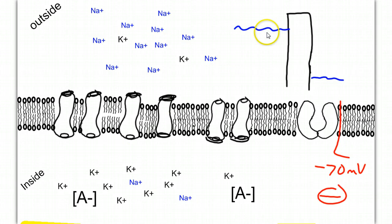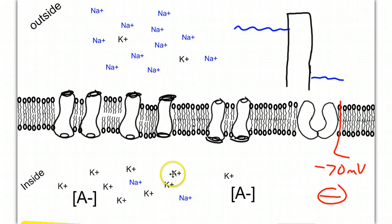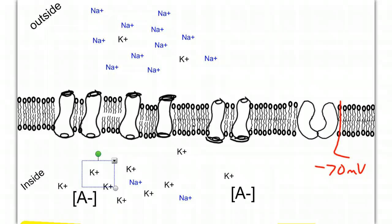Just like water trapped behind a dam, the sodium ions would like to move down their concentration gradient, and the potassium ions would like to move down their concentration gradient. If given the chance, the ions will move. Since they are charged particles, and charged particles don't move through the bilipid layer very well, we have to rely on protein channels and gates.